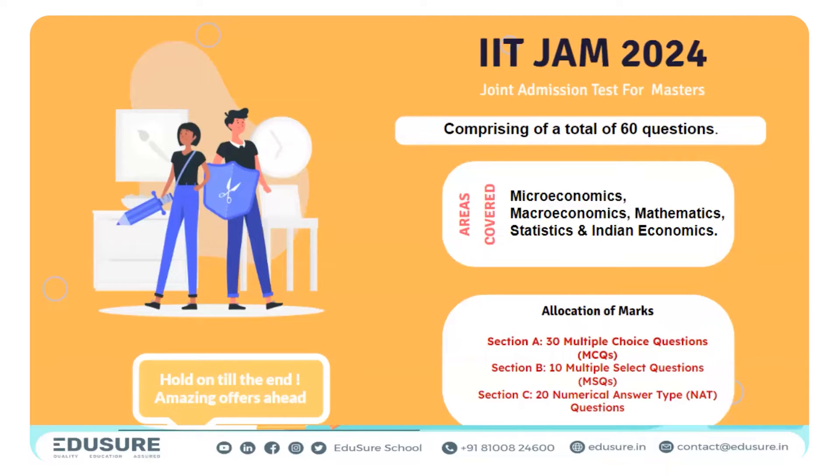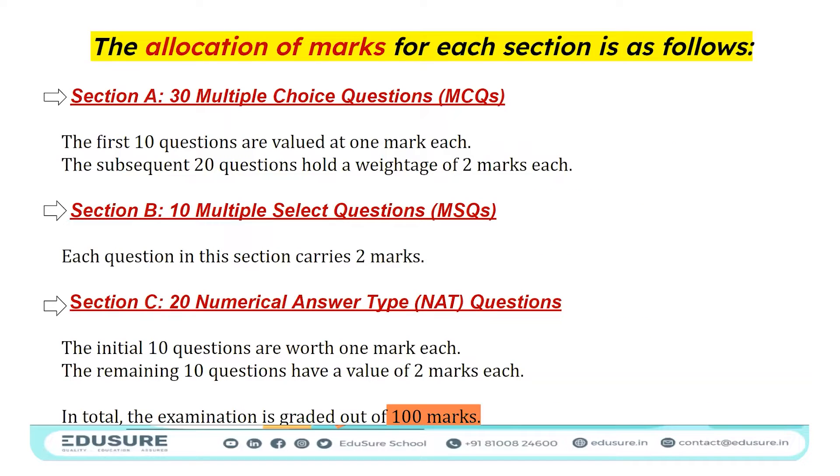There are three sections. Section A has 30 MCQs, which has basically 10 MCQs at 10 marks each, and the other 20 will be two marks each.